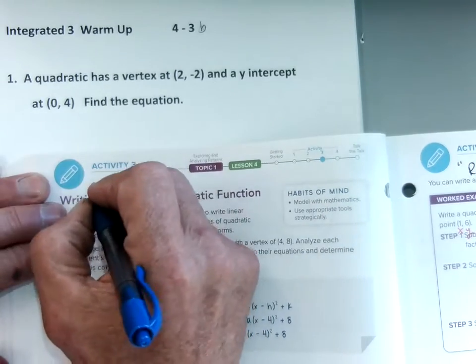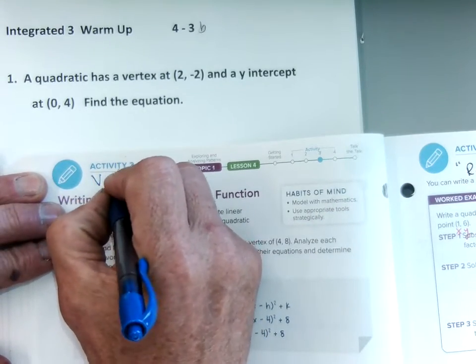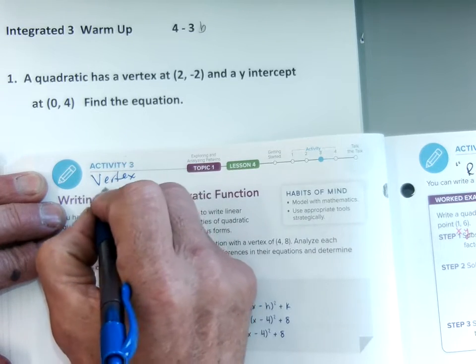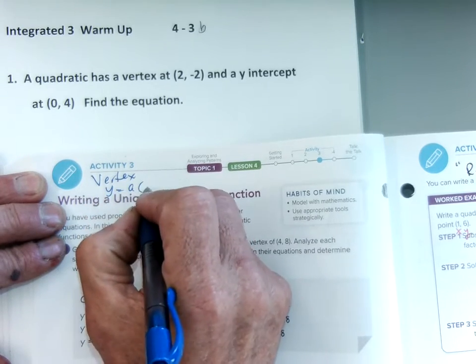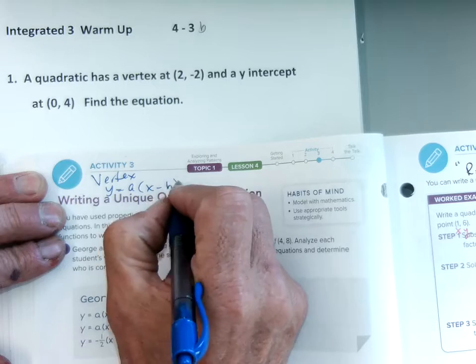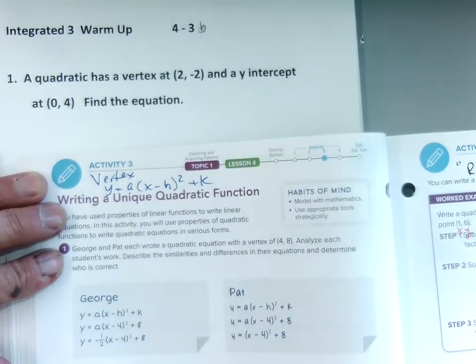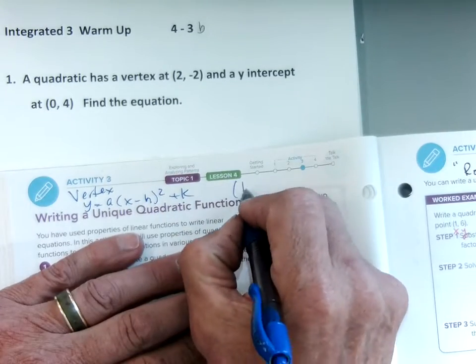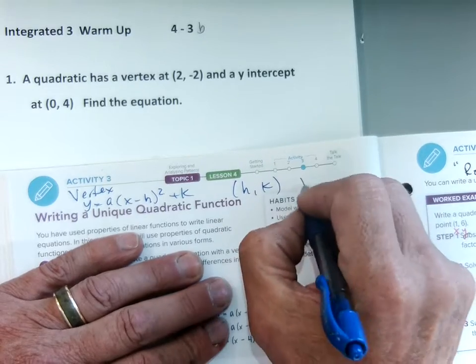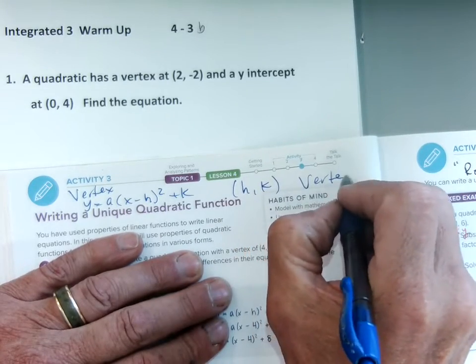The first form we have is vertex form: y equals a(x minus h) squared plus k. We've seen that where h and k are the vertex. Of course, this is in your notes.